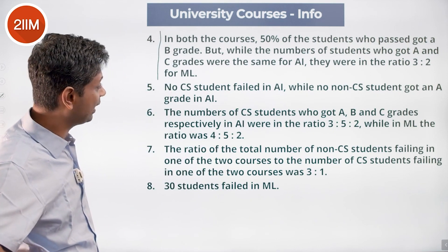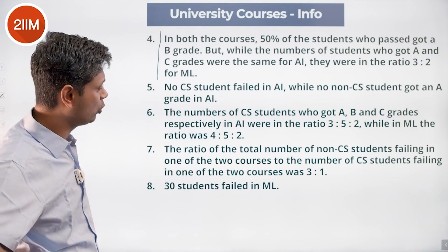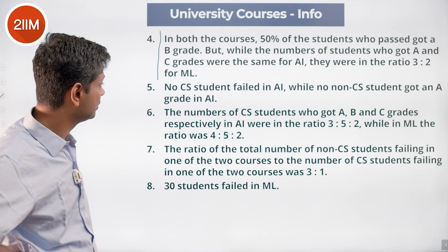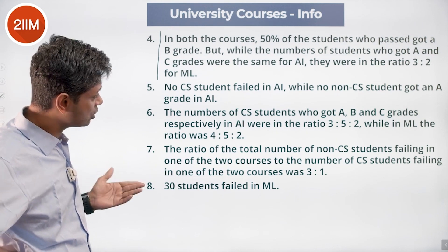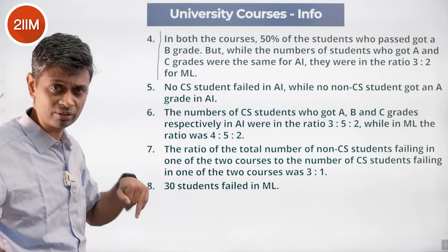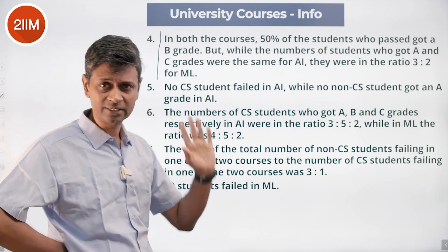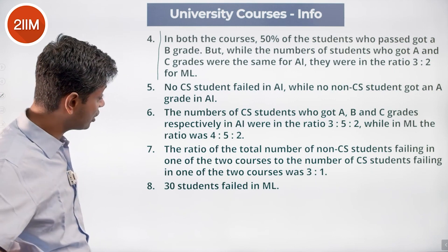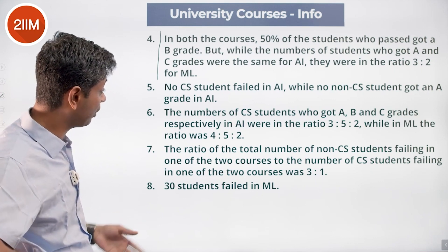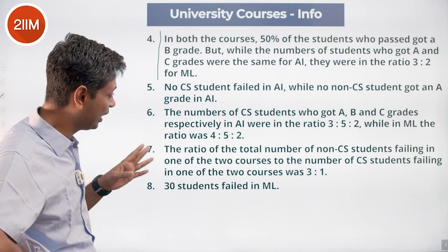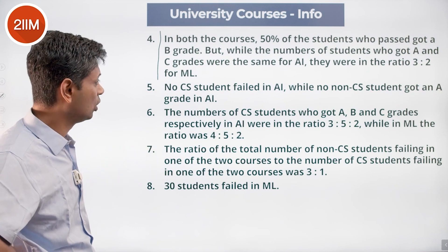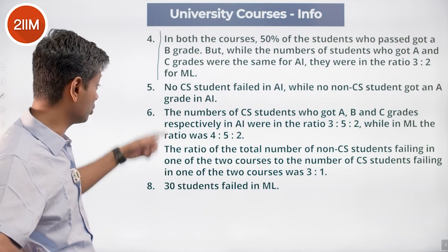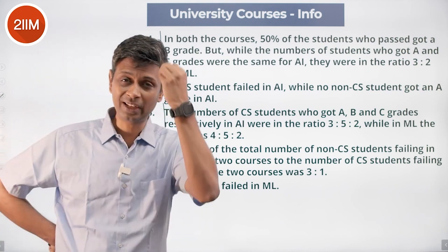No CS student failed in AI, and no non-CS student got an A grade in AI. The numbers of CS students who got A, B, and C grades respectively in AI were in the ratio 3:5:2, while in ML the ratio was 4:5:2.